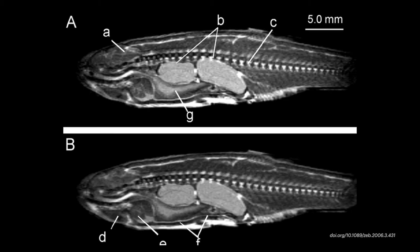Here's another cool thing you can do with zebrafish — you can take MRIs of them. An MRI is a magnetic resonance image, used a lot in medicine to see what's happening in people's bodies. You can put these fish into a very tiny MRI and take a look at not only their bones — here's the spine — but also their soft tissue, giving you a good sense for how all the organs of the fish are laid out next to each other.